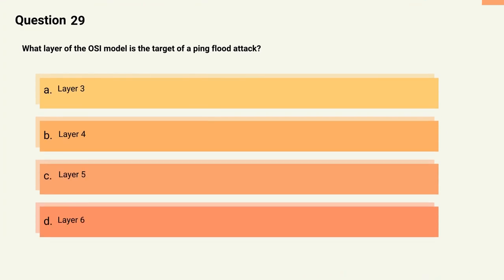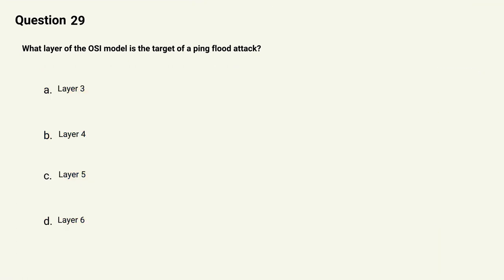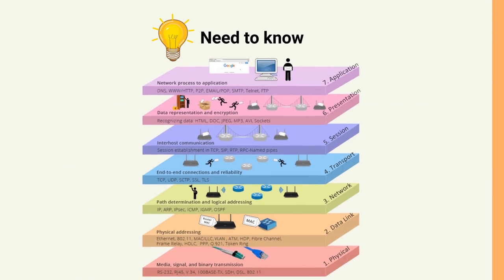Question 29: What layer of the OSI model is the target of a ping flood attack? Options: A) Layer 3, B) Layer 4, C) Layer 5, D) Layer 6. The correct answer is Option A, Layer 3. Explanation: A ping flood attack is a type of DoS attack that targets the network layer, Layer 3, of the OSI model by flooding the target server with a large number of ICMP echo-request (ping) packets.